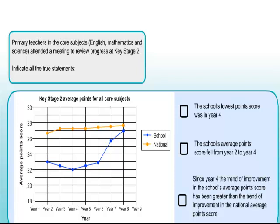Question 26. Primary teachers in the core subjects attended a meeting to review progress at key stage 2. Statement one: the school's lowest points score was in year 4. The school is highlighted in blue — year 4 is clearly the lowest score of any of the school's years. So that statement is true. Statement two: the school's average points score fell from year 2 to year 4. Going from year 2 to year 3 it decreases, and from year 3 to year 4 it decreases again — a continuous drop. So that's also true.